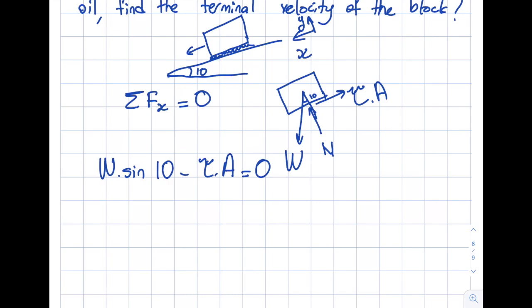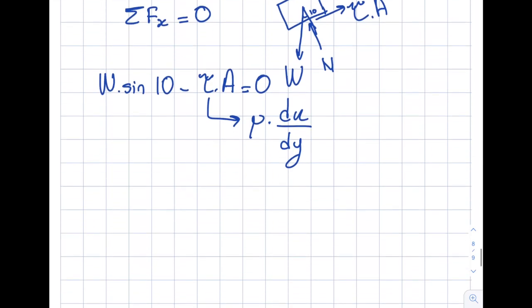But we have a formula from fluid mechanics. We have viscosity times du/dy. This is given as glycerin, so I should be able to find my viscosity. Let's write this down. W sin 10° minus viscosity times du/dy times area equals 0.